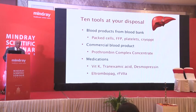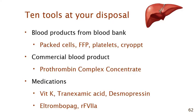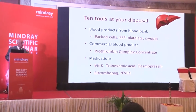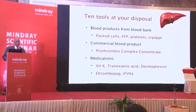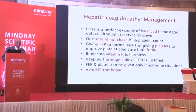If at all bleeding in liver disease, you have ten products with which you can treat the person, divided into three groups: blood bank products (packed cells, plasma, platelet, cryo); commercial products like prothrombin complex concentrate; and drugs like vitamin K, tranexamic acid, desmopressin, eltrombopag, and NovoSeven (recombinant factor VIIa). One or more of these will be used in clinical practice to control bleeding in liver disease.